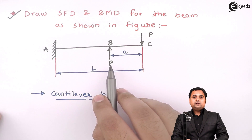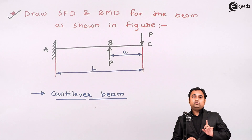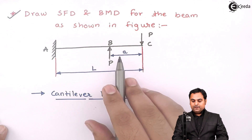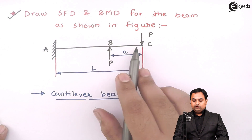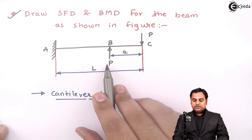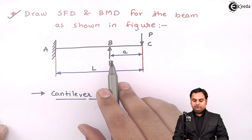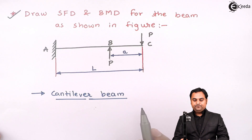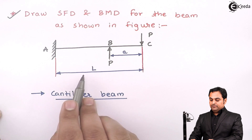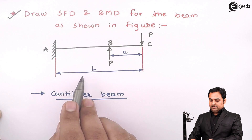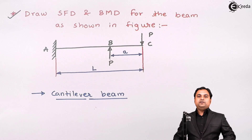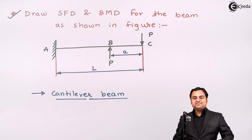There is another load which is acting from the downward direction, going up at point B. So there are two forces: P which is acting downward at point C, and another force P acting upward at point B. The distance from B to C is small a, and the length of the beam is capital L. Point A is fixed. We have to draw the shear force and bending moment diagram.